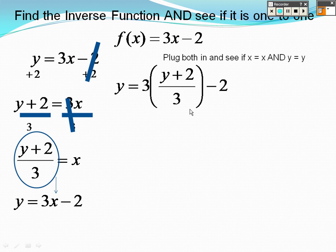I realize that the 3 in the top and the bottom cancel right out, so I get y plus 2 minus 2. And the plus 2 minus 2 cancel, so I get y equals y. So I'm off to a good start.